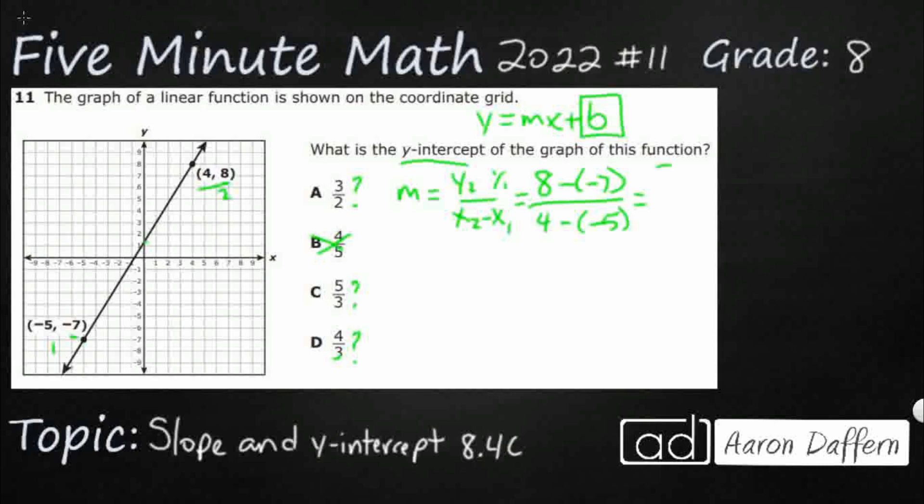All right. So I'm going to end up with 8 plus 7, because the two negatives make a positive. Same with this down here. I'm going to have 4 plus 5. All right. So I've got 15 over 9. So my slope is going to be, if I can reduce it by 3, 5 thirds. All right. So that's my m.